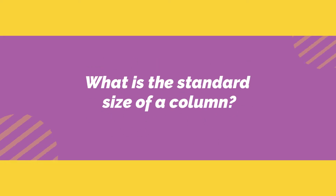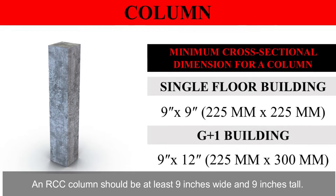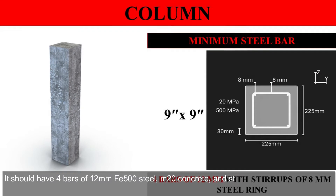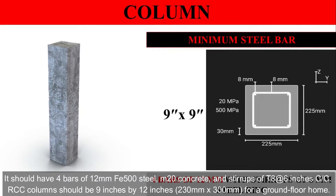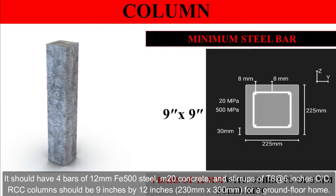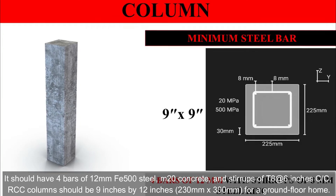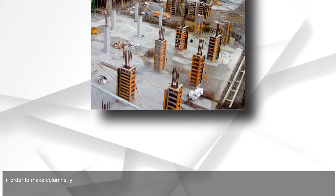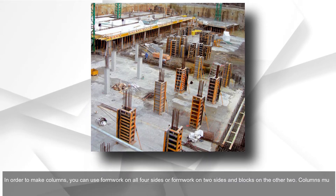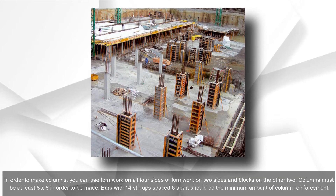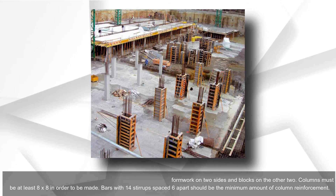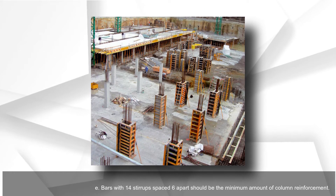What is the standard size of a column? An RCC column should be at least 9 inches wide and 9 inches tall, with 4 bars of 12mm FE 500 steel, M20 concrete, and stirrups of T8 at 6 inches C/C. Columns should be 9 inches by 12 inches (230mm x 300mm) for a ground floor home. You can use formwork on all four sides, or formwork on two sides and blocks on the other two. Columns must be at least 8 x 8, with bars and 14 stirrups spaced 6 inches apart as the minimum column reinforcement.